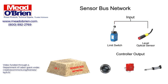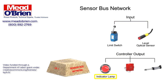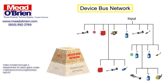multiple basic field devices like limit switches or level optical sensors are connected to one network cable. The sensor bus network is also capable of transmitting output signals from the controller over one cable to indicator lamps, alarms, or other actuator devices. The next increasingly complex level of industrial field bus networking is the device bus network.